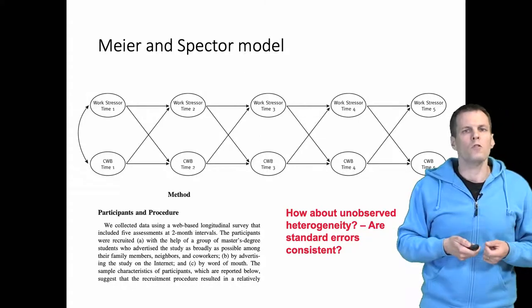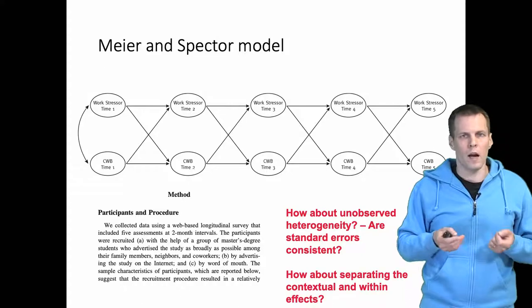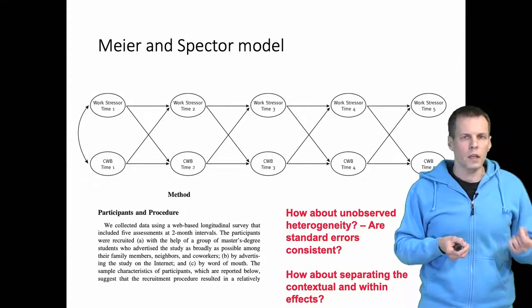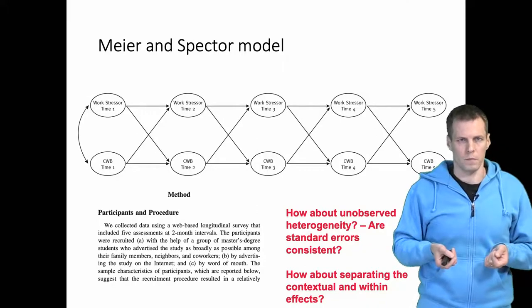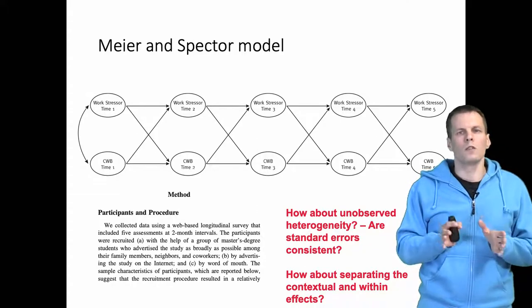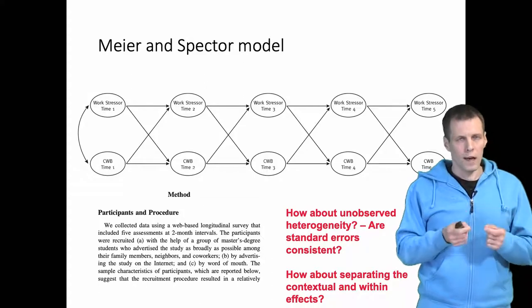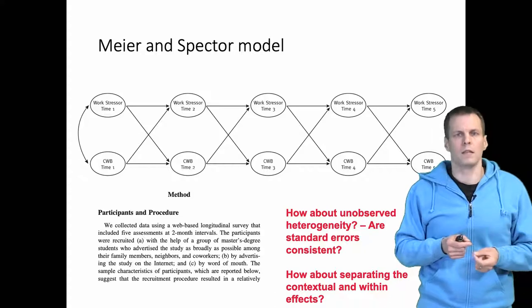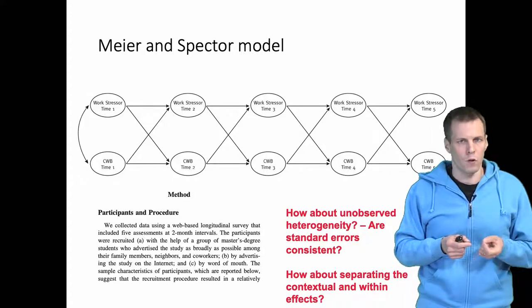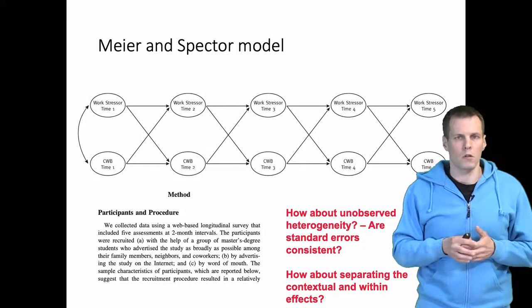What is of concern is what we are actually estimating. Are we estimating the within effect, the between effect, the contextual effect, or the population average effect? It turns out that this model actually estimates the population average effect, which will be the same as the within effect if contextual effects are zero. Can we always assume that the contextual effects are zero?